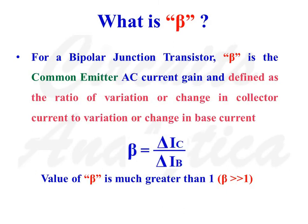What is beta? For a bipolar junction transistor, beta is the common emitter AC current gain and defined as the ratio of variation or change in collector current to variation or change in base current. Beta is equal to delta Ic divided by delta Ib. So, for a transistor in common emitter configuration, Ic is the output current and Ib is the input current. The value of beta is always much greater than 1.